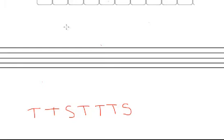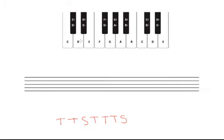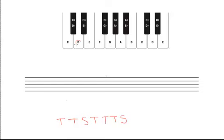A major scale starts on one note and ends on that note an octave higher. It involves one note per letter name of the musical alphabet. So let's do an example to see what I mean. Let's draw in our treble clef here.